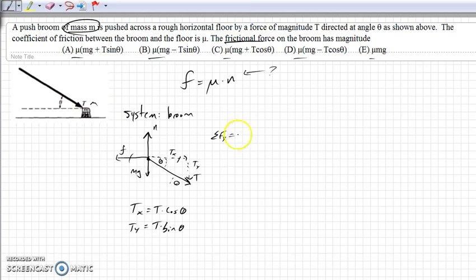So the normal force, which is the positive vertical force, minus mg, minus Ty, all add up to zero. Then I can add mg and Ty to both sides. So I find that the normal force equals the weight plus the downward part of the tension.